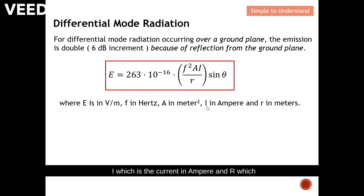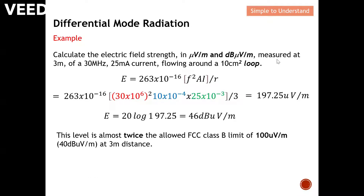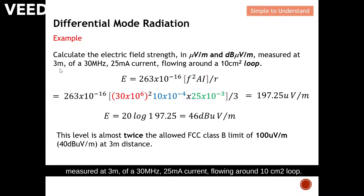In this equation, E is in volts per meter, frequency is in hertz, area is in meters squared, I is the current in amperes, and r is the distance of observation in meters. For Example 1: calculate the electric field strength in microvolts per meter and dB microvolts per meter, measured at 3 meters, of a 30 MHz 25 milliampere current flowing around a 10 centimeter squared loop.